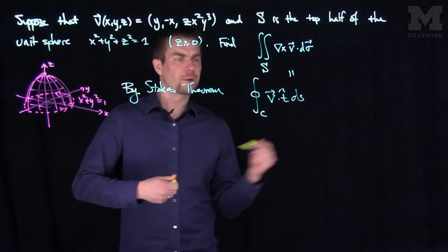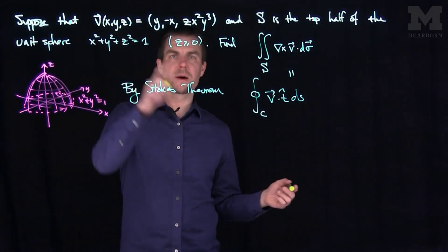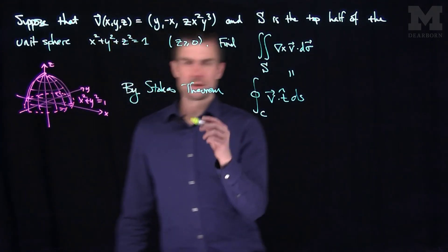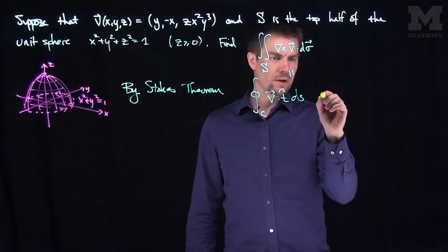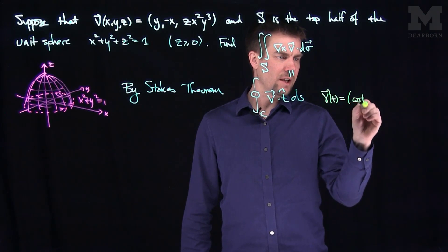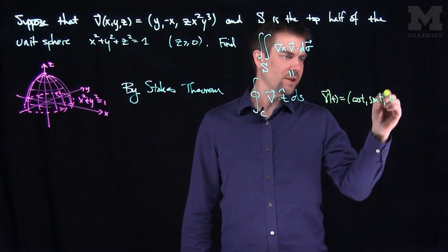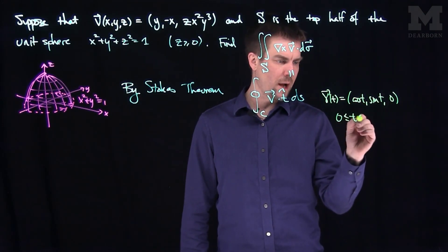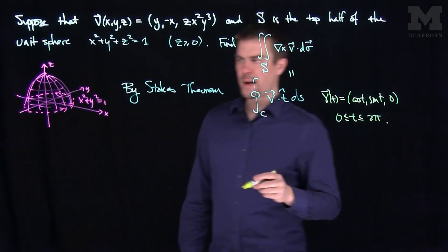And so now what we can do is we can parametrize this. So what we have over here, of course, this unit circle over here can be parametrized. Our curve C is gamma of t. It's just going to be cosine of t, sine of t, comma zero, where t goes between zero and two pi. That is my boundary curve.